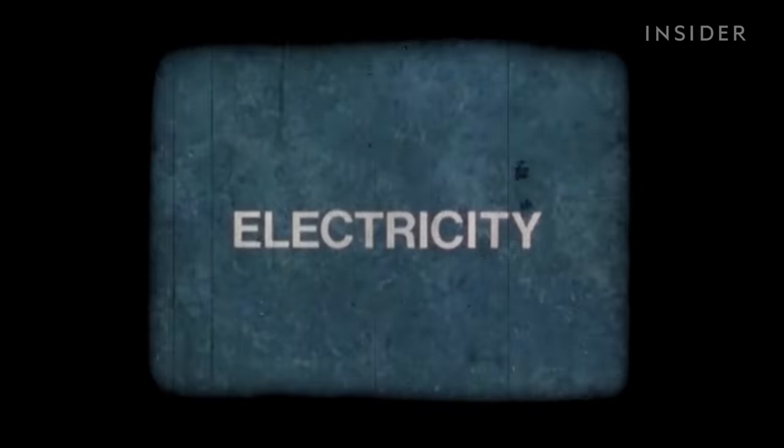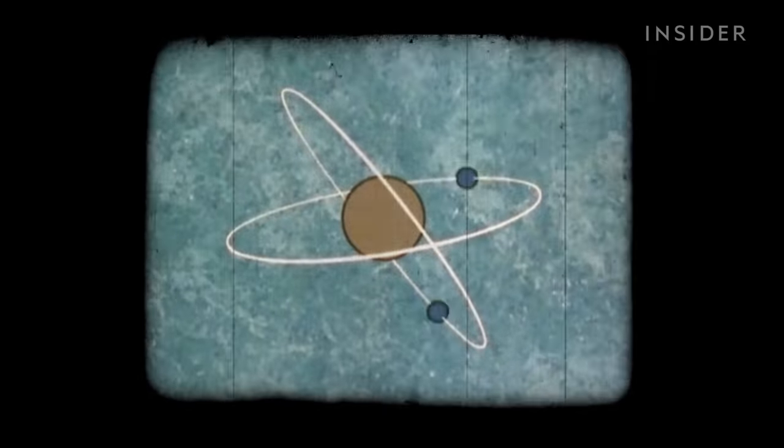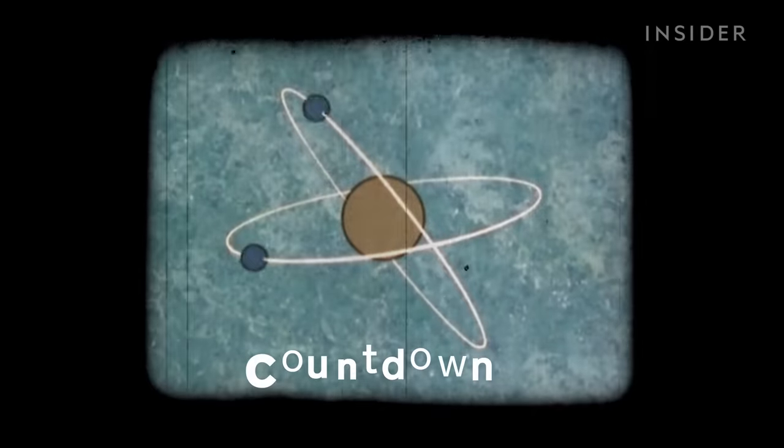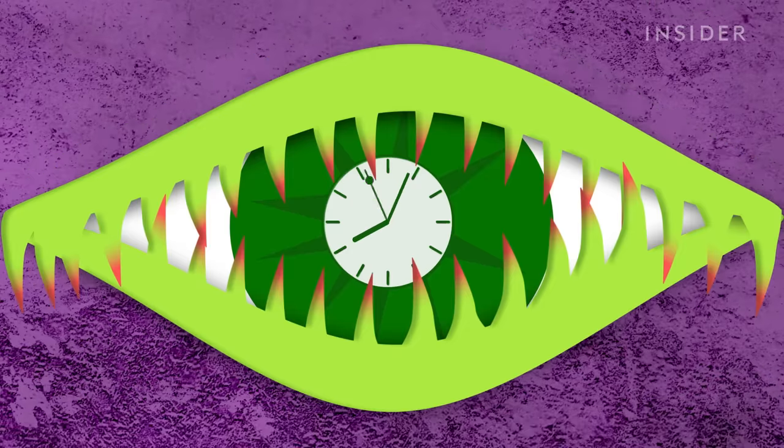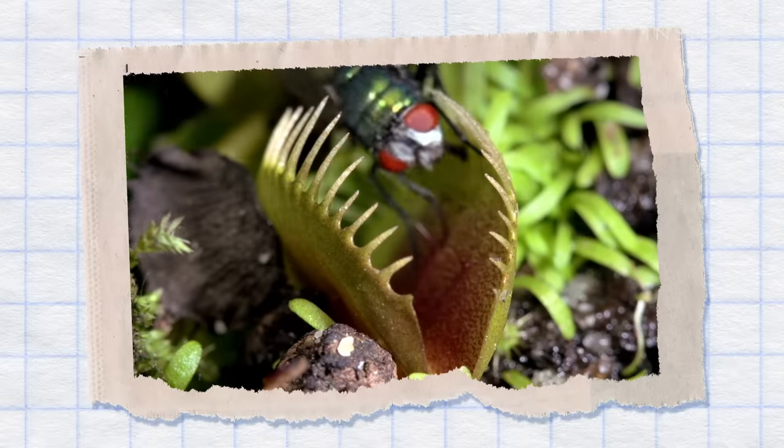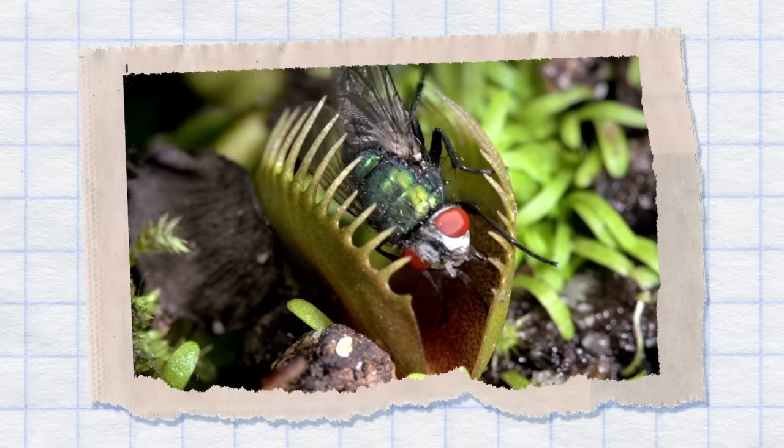The first time a spider knocks into a hair, it sets off an electrical signal, sort of like the electrical currents in your brain. That signal starts the countdown. If the bug escapes within 20 to 30 seconds, nothing else happens. That way, the plant doesn't waste energy.